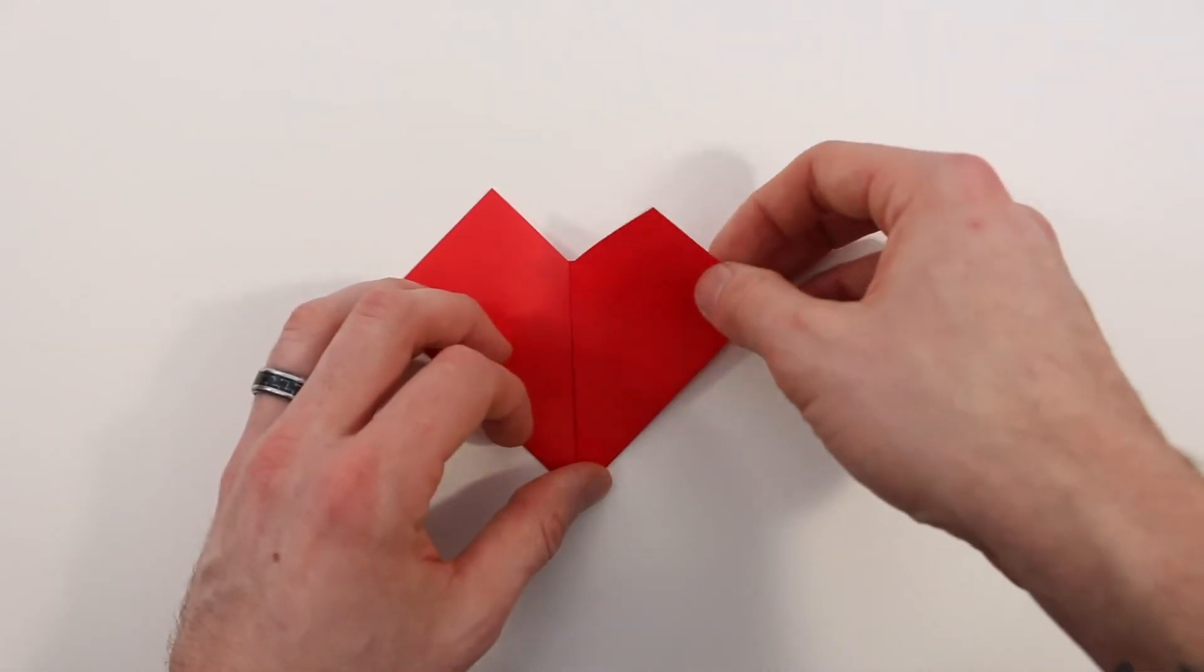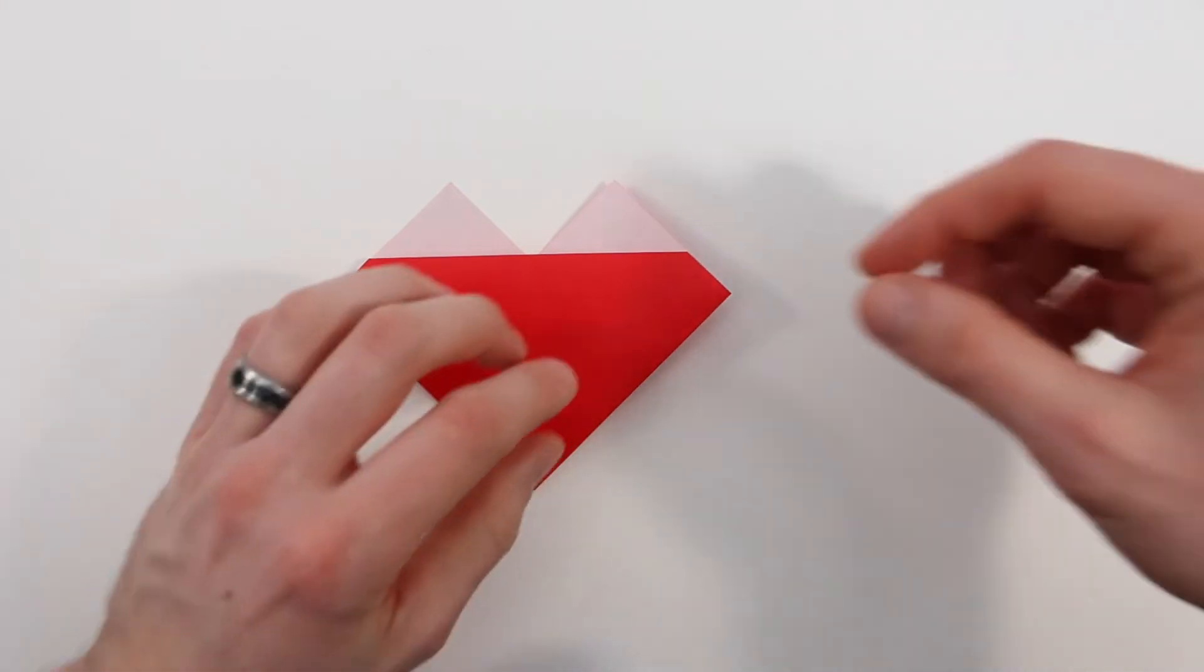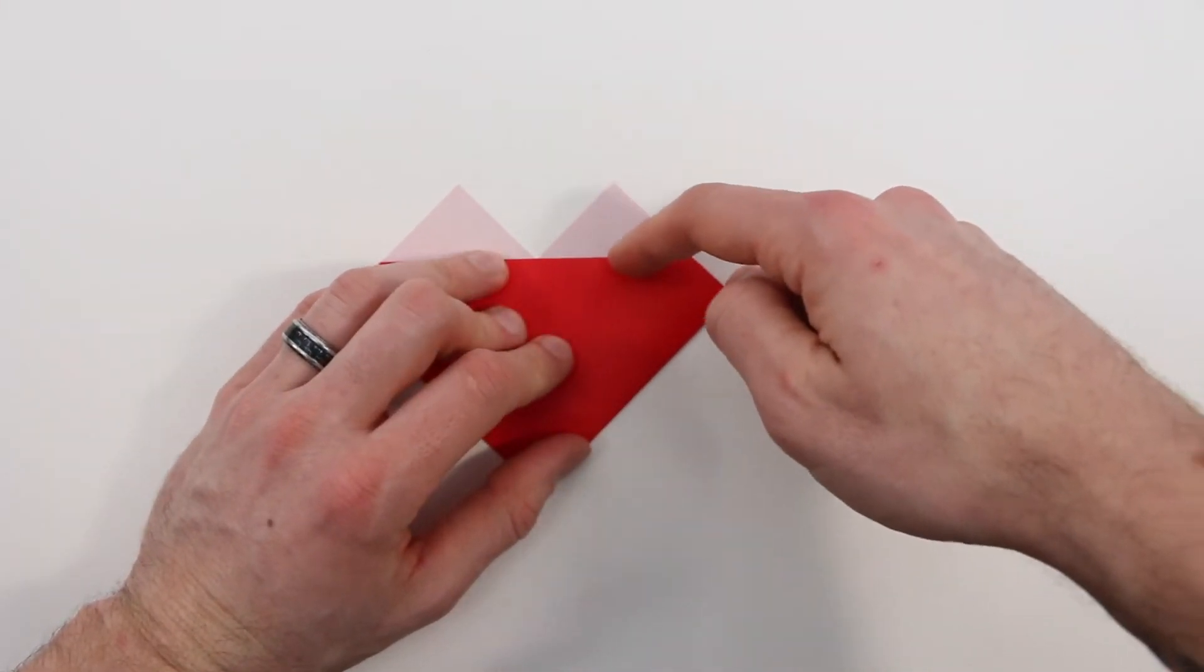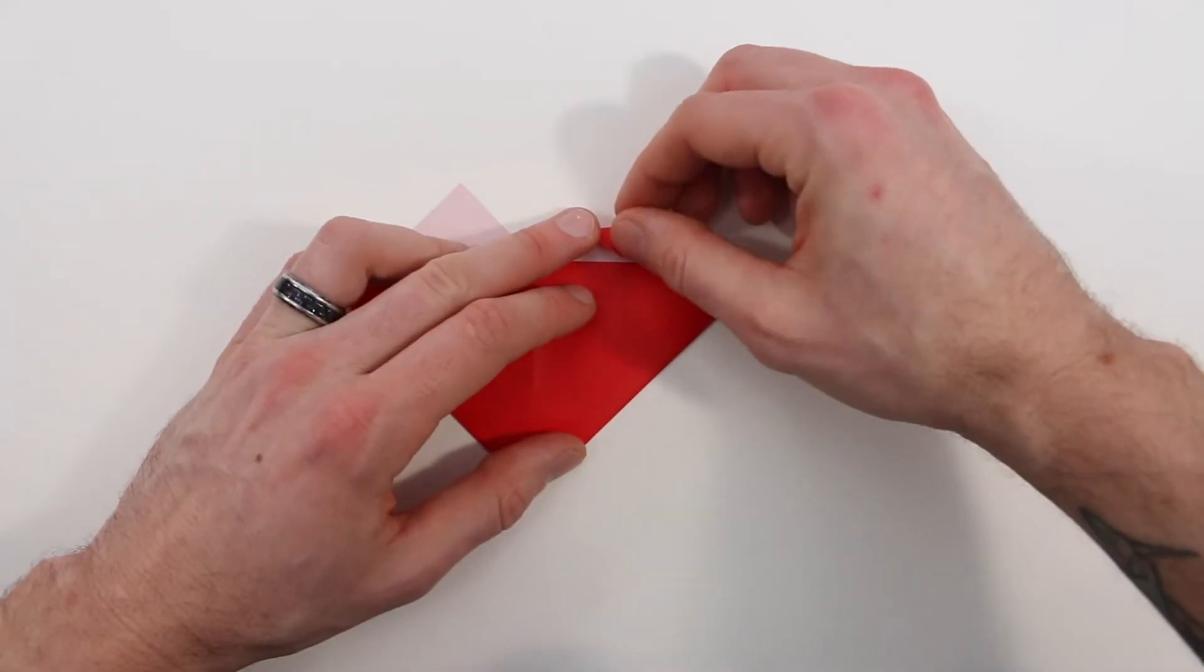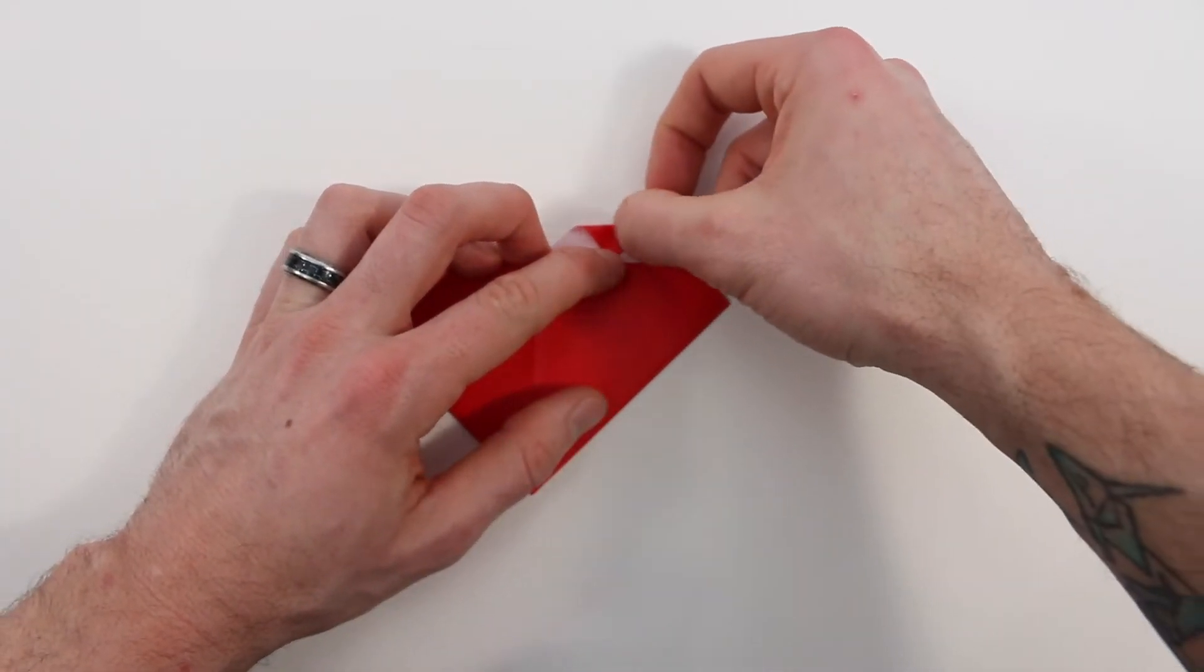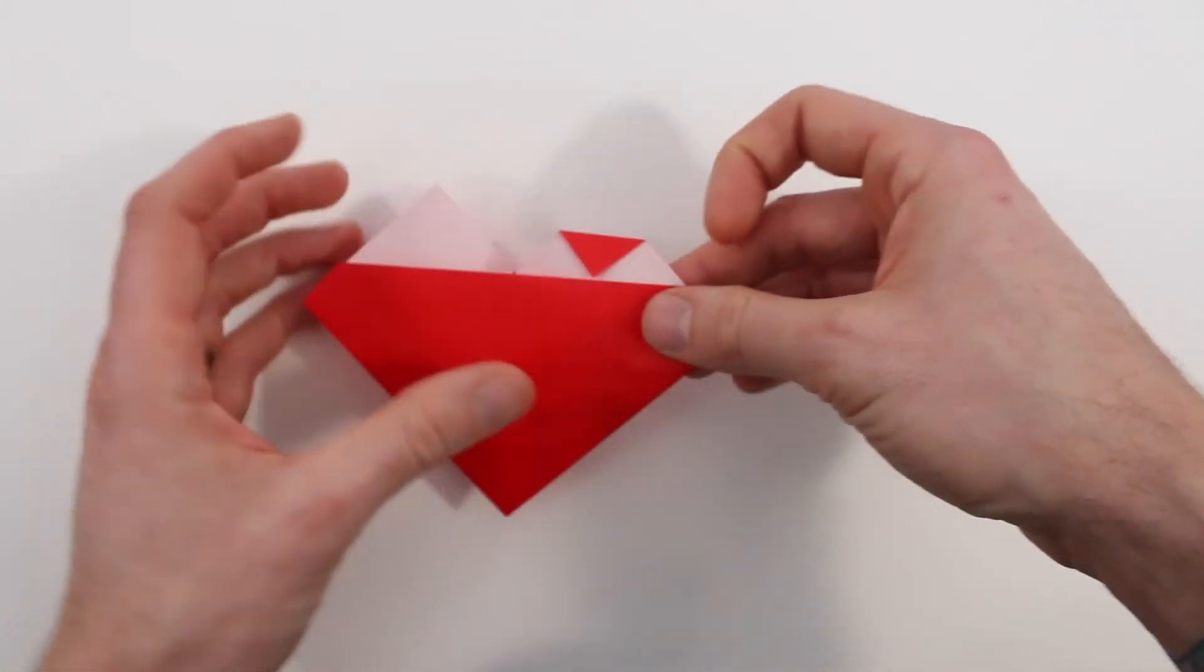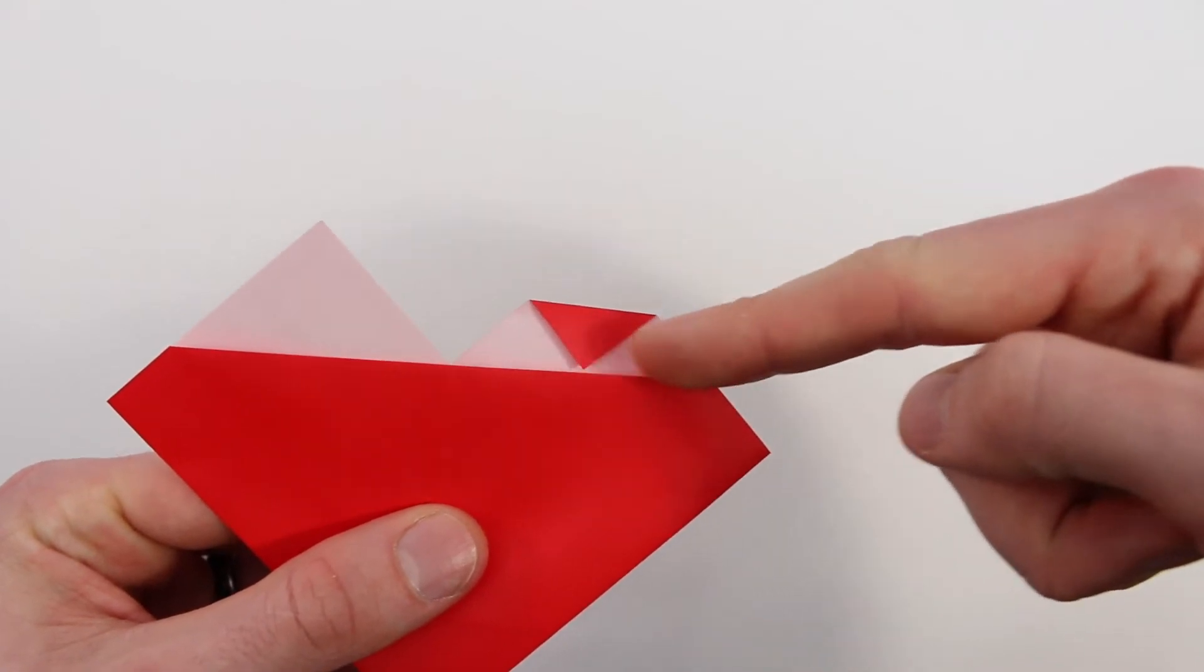Now turn the whole model over right to left. Next we're going to bring this point on the top right down to meet this edge where the color changes. Now we'll fold that down, and the crease we're going to make we want to run parallel to the edge below it. So it should look like that, try to make this edge parallel with this edge.